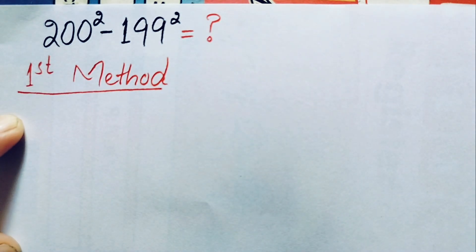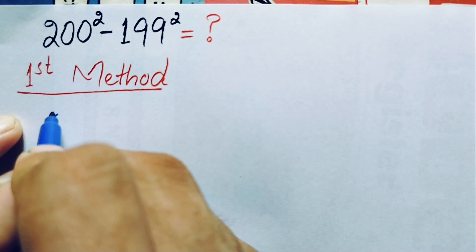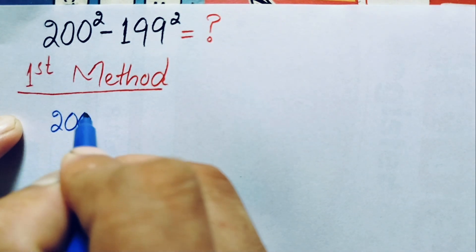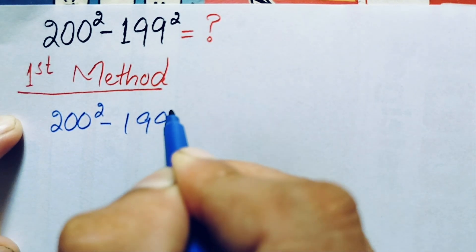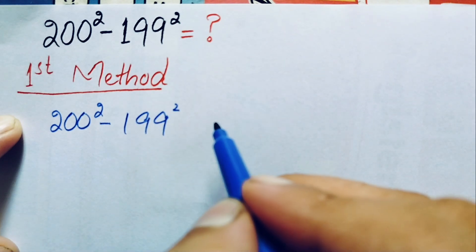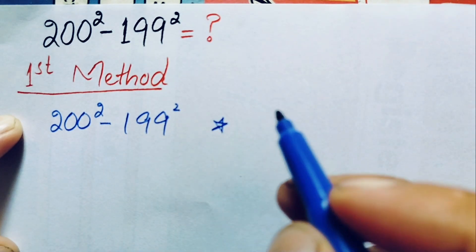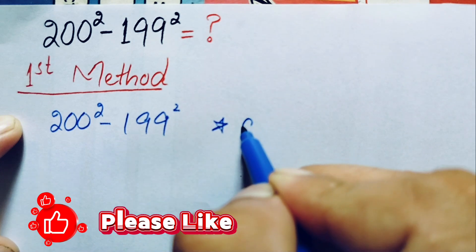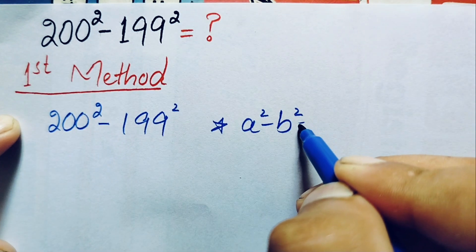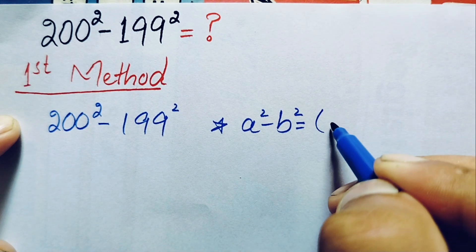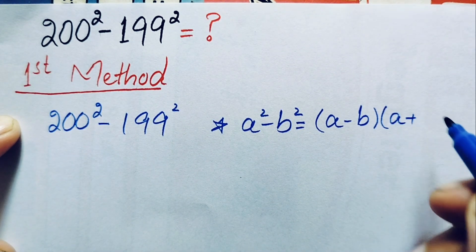For the first method, we take the question: 200 squared minus 199 squared. Here we will use an algebraic identity. The identity is: a squared minus b squared is equal to a minus b times a plus b.